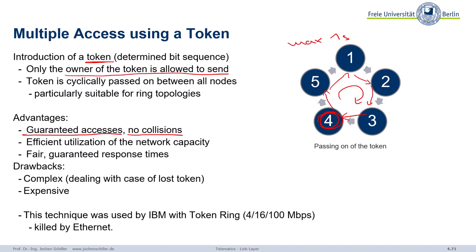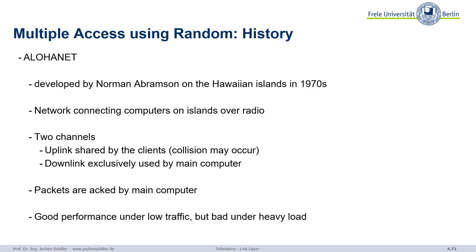The token ring idea is good for certain purposes — you can guarantee access, delay, and even data rates — but like many other technologies, it was killed by Ethernet. It's also more complex in terms of cabling. Can we do it in a simpler way, still distributed, but very simple? There is a wireless history behind this: it's called AlohaNet, from the Hawaiian islands.